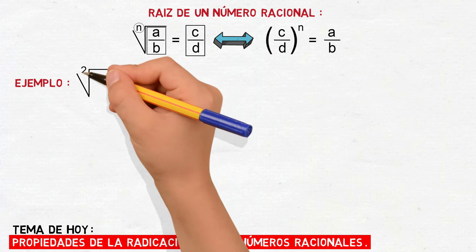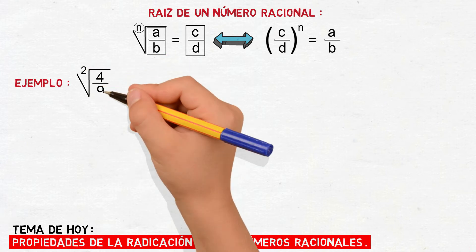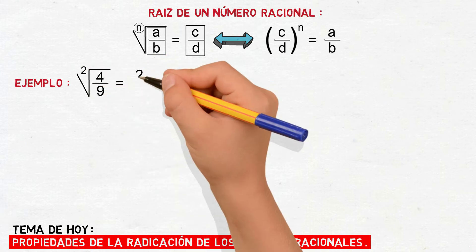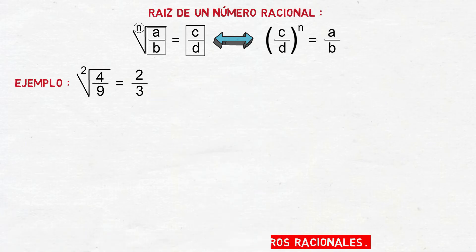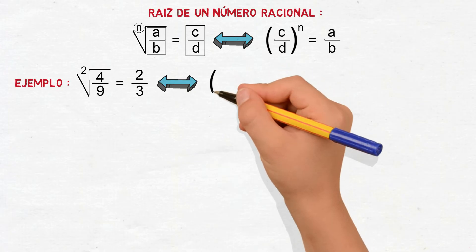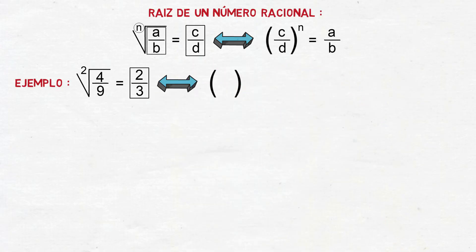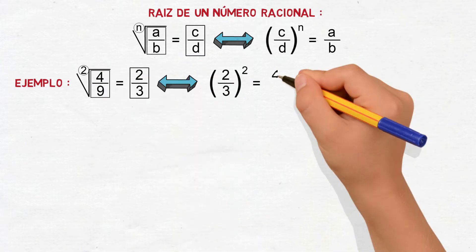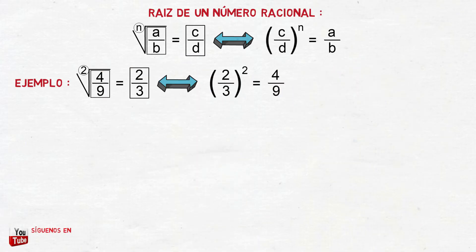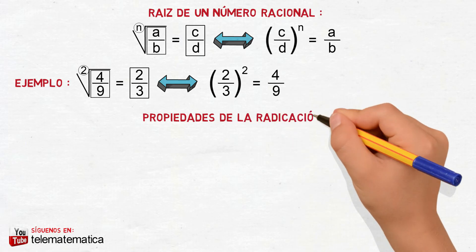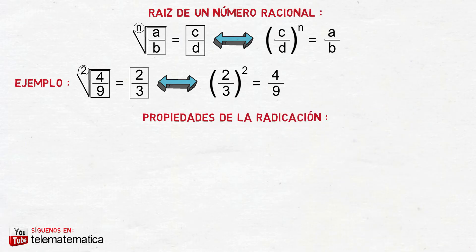Veamos un ejemplo: la raíz cuadrada de 4 novenos va a ser igual a 2 tercios, ya que se cumple que el resultado de la raíz 2 tercios elevado al índice 2 va a ser igual al radicando 4 novenos. Veamos entonces cómo se definen las propiedades de la radicación para el conjunto de los números racionales.